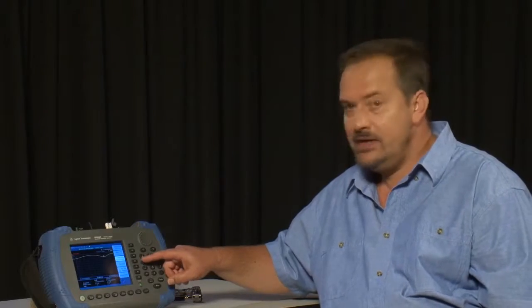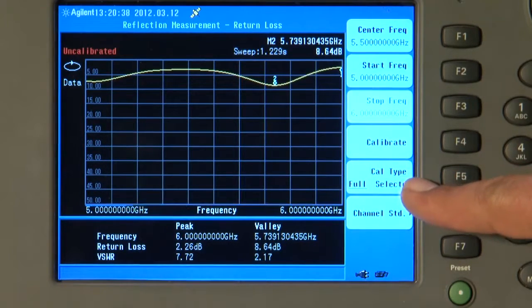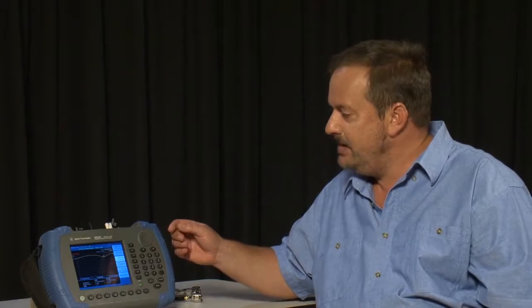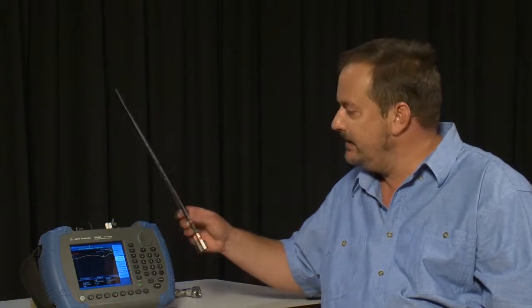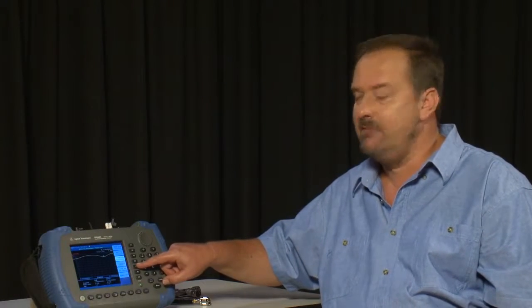Next, we need to do a calibration. You will see here there are two Cal types. We can either select Full, which will calibrate the entire frequency range of the instrument, which means we can connect any antenna, change frequency, and not have to recalibrate every time. But in this instance, we know that this antenna operates around 5.5 GHz, so I am going to select the Cal type of Selected, and this will just calibrate over the frequency range of interest.